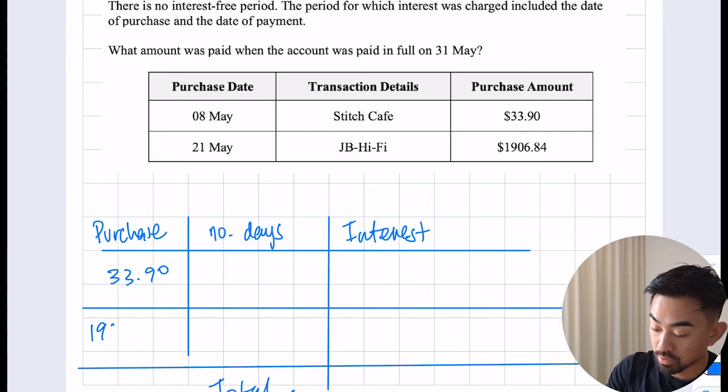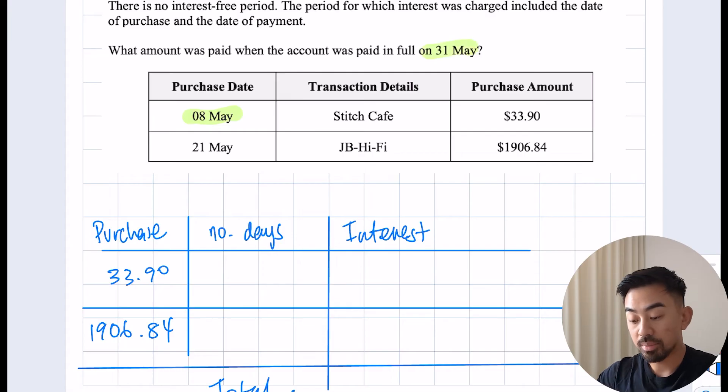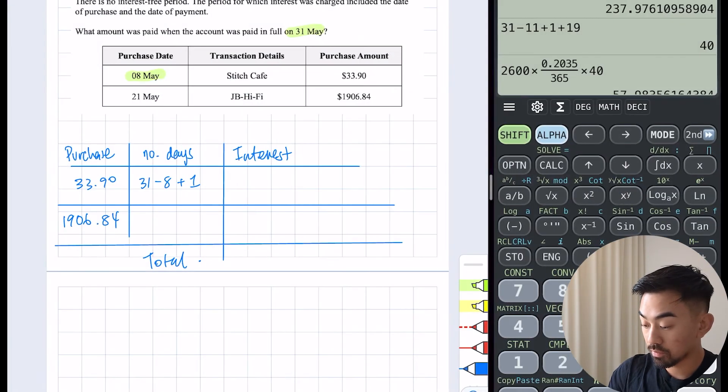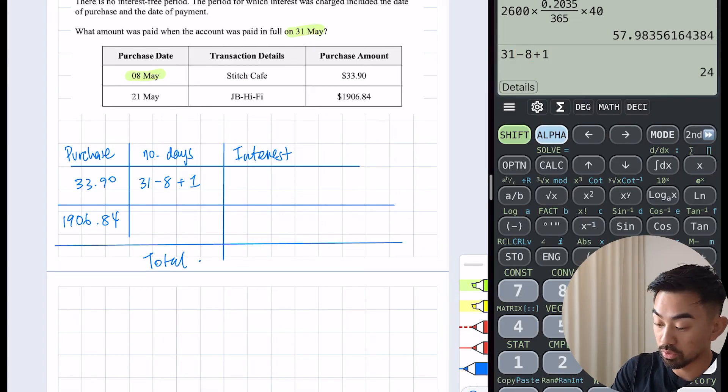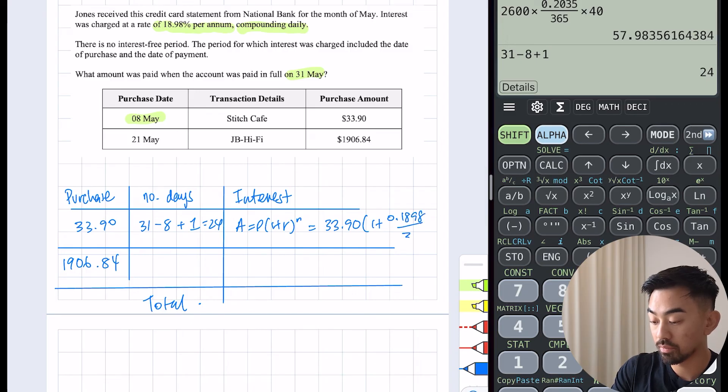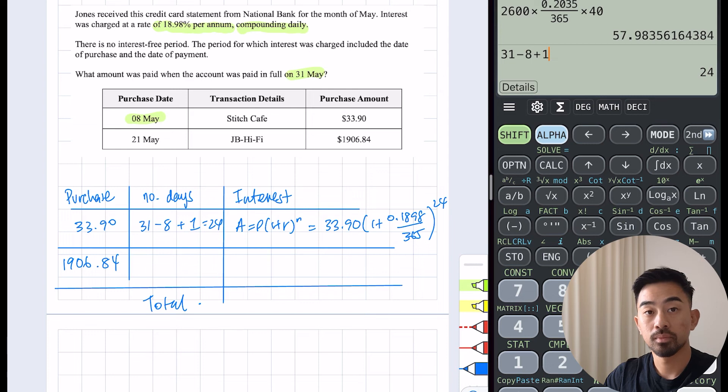How many days from the 8th of May till the 31st? It's going to be 31 minus 8, but I have to plus 1 because I'm also including their purchase. So 31 minus 8 plus 1, that's 24 days. My interest is compound, so A = P(1 + r)^n. It's $33.90 times (1 plus 0.1898 over 365) to the power of 24. Repeat it for the next question.